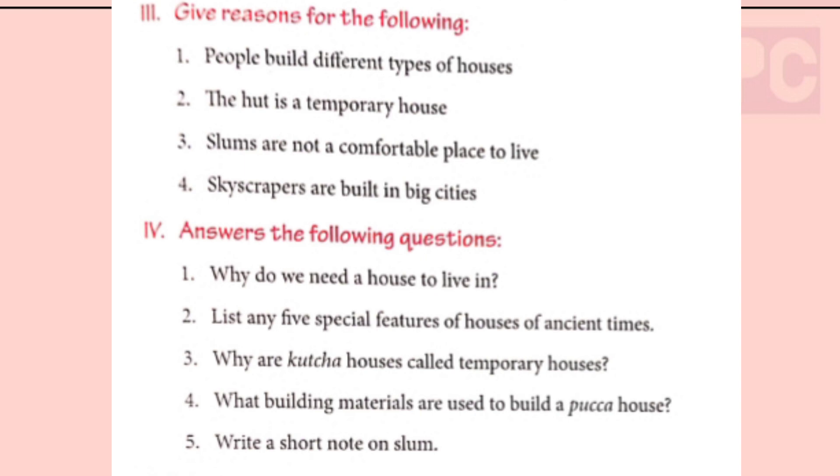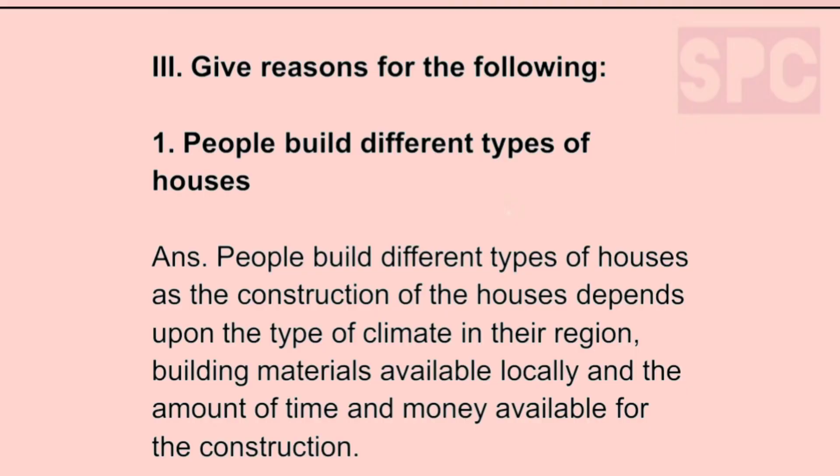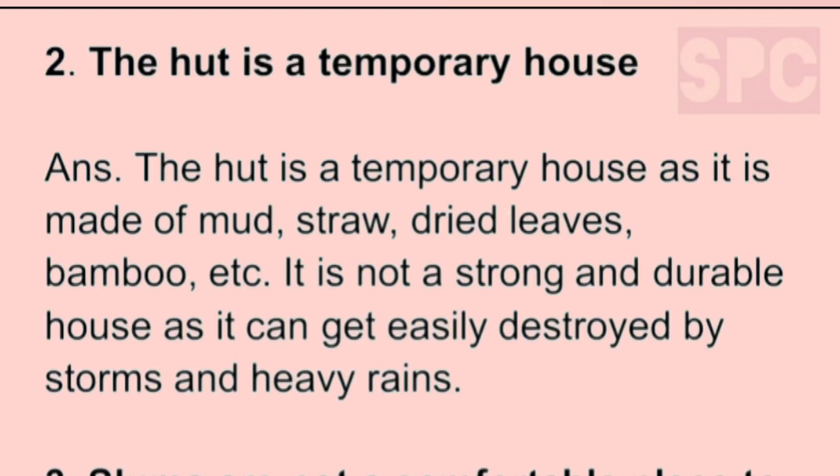Third question: give reasons for the following. Question 1: People built different types of houses. Answer: people built different types of houses as the construction depends upon the type of climate in the region, building materials available locally, and the amount of time and money available. Question 2: The hut is a temporary house. Answer: the hut is a temporary house as it is made of mud, straw, dried leaves, bamboo, etc., and is not strong and durable.